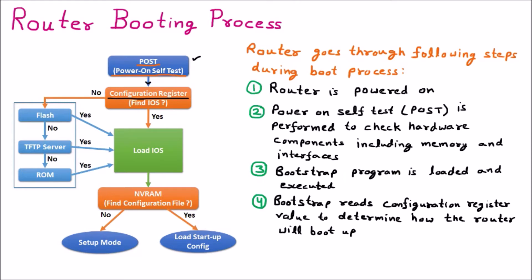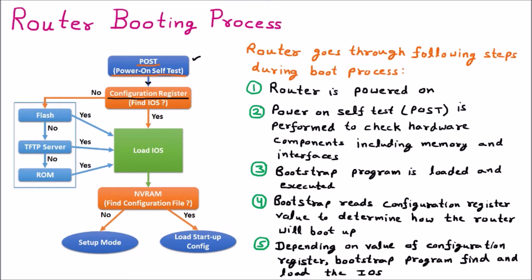Step five: depending upon the value of the configuration register, the bootstrap program finds and loads the IOS. In the diagram, we can see the bootstrap checks the configuration register and finds the configuration file so the OS can be loaded. If the OS is present, it proceeds to load the IOS. But if the configuration files are not present and bootstrap cannot load the IOS, we move to step six.